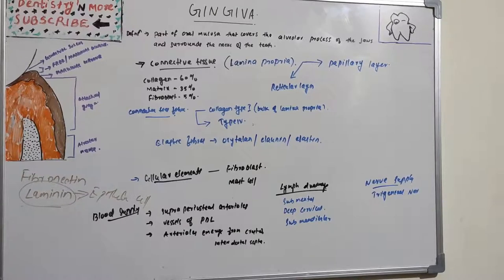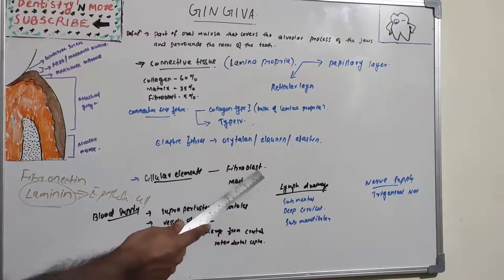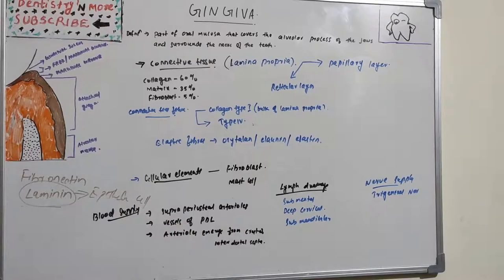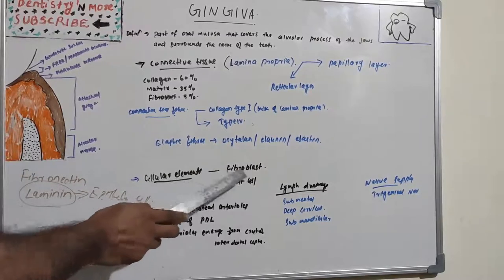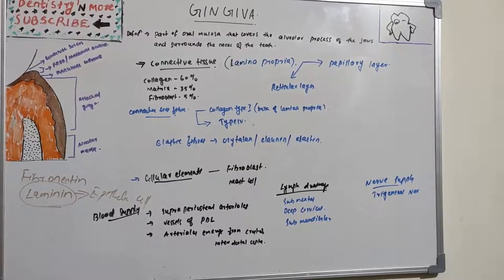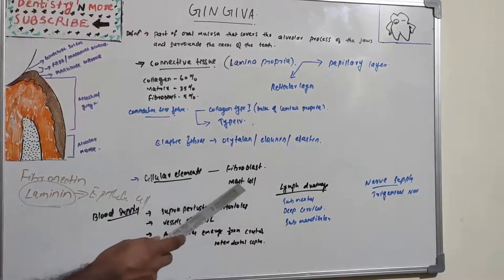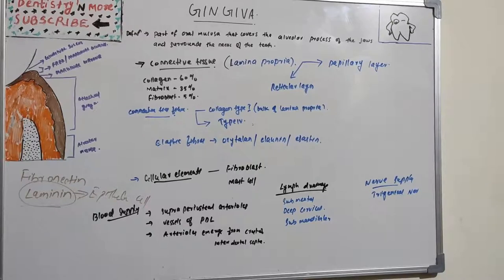Cellular elements include fibroblasts, which are of mesenchymal origin and play a major role in the development, maintenance and repair of gingival connective tissue. They synthesize collagen and elastic fibers as well as glycoproteins and glycosaminoglycans. They regulate collagen degradation through phagocytosis. Also present are mast cells, which are numerous in connective tissue, fixed macrophages, histiocytes, adipose cells, eosinophils, neutrophils, plasma cells and lymphocytes.